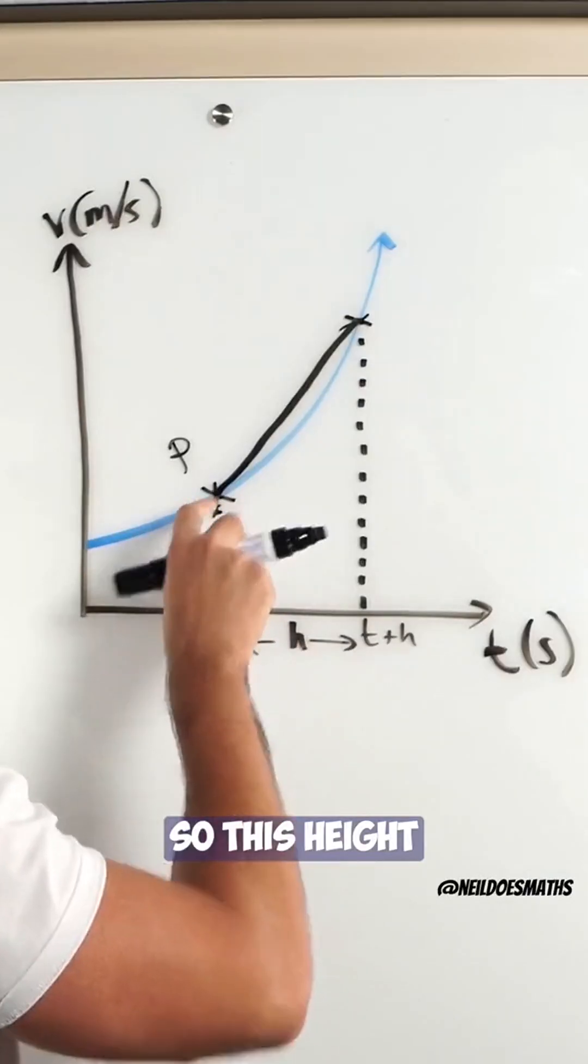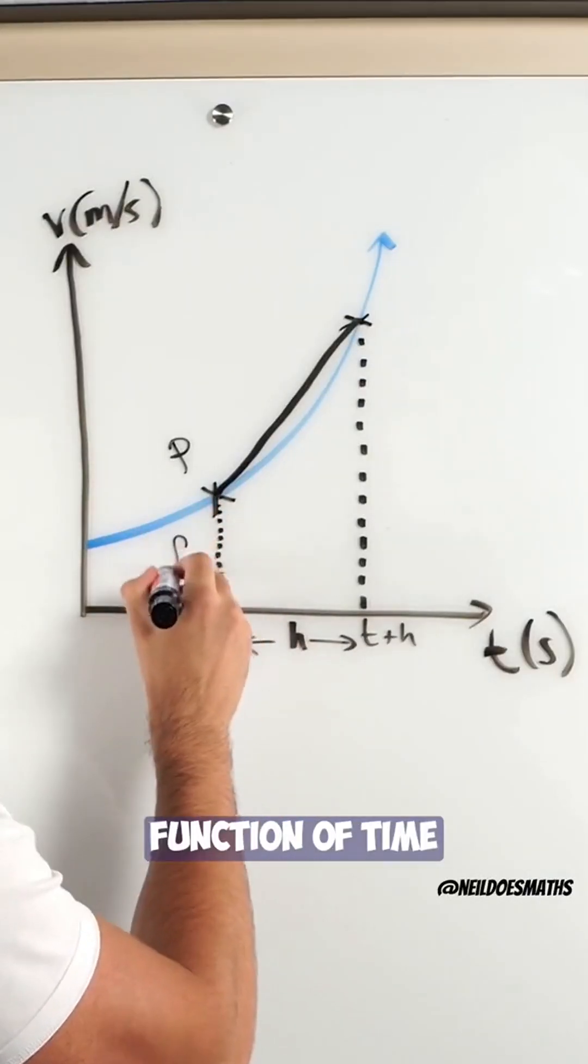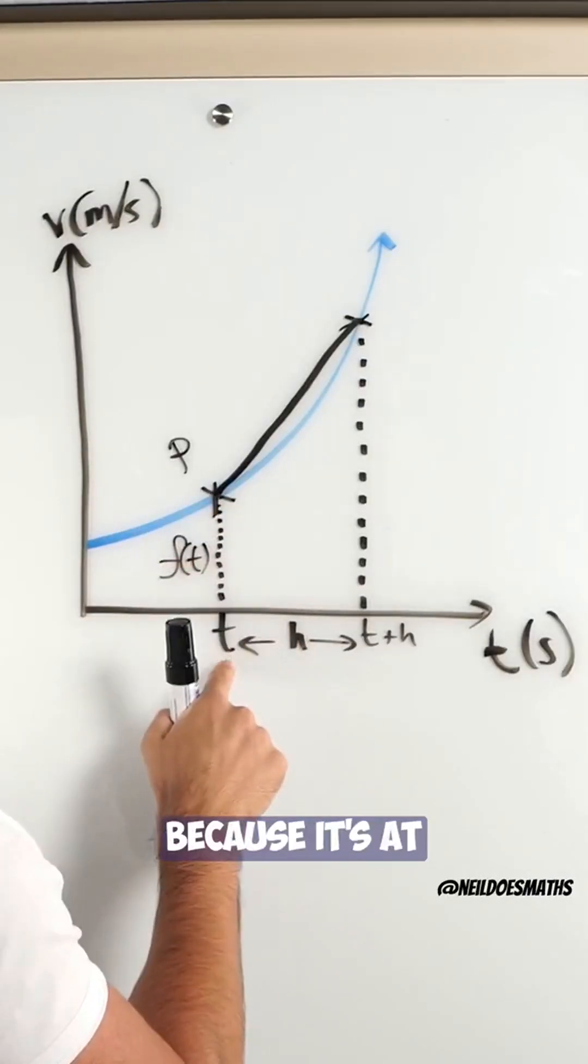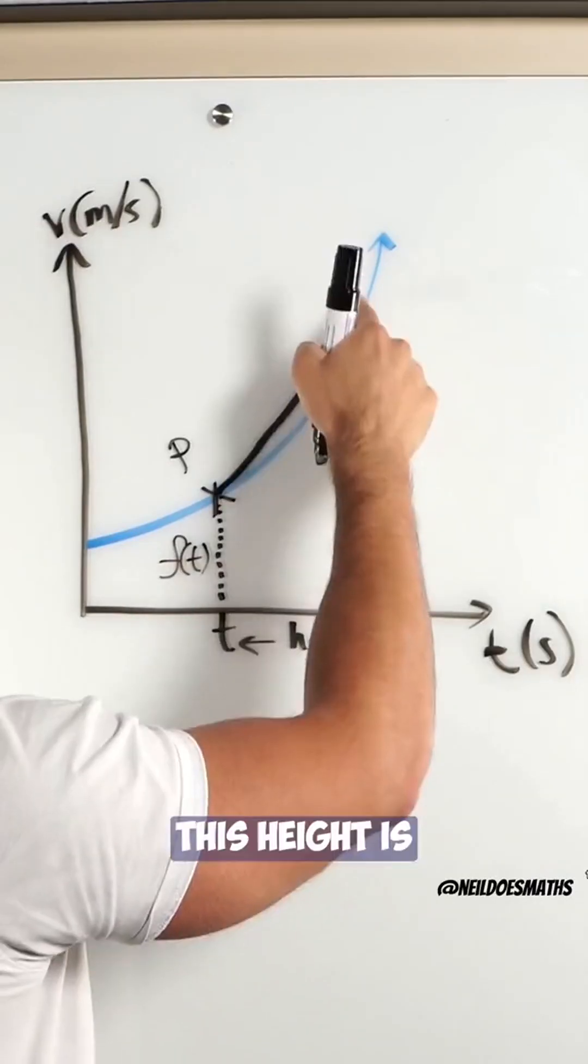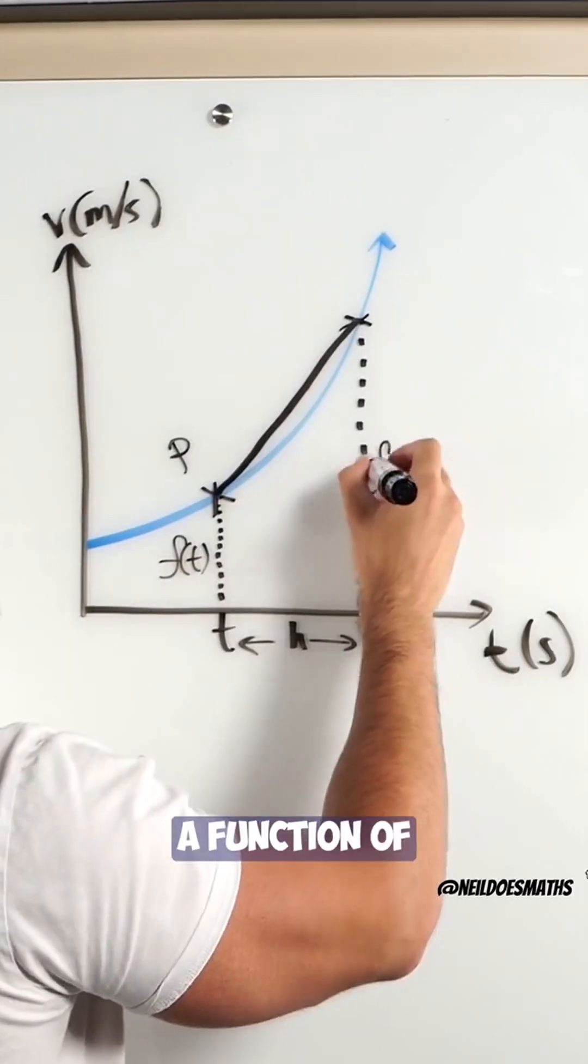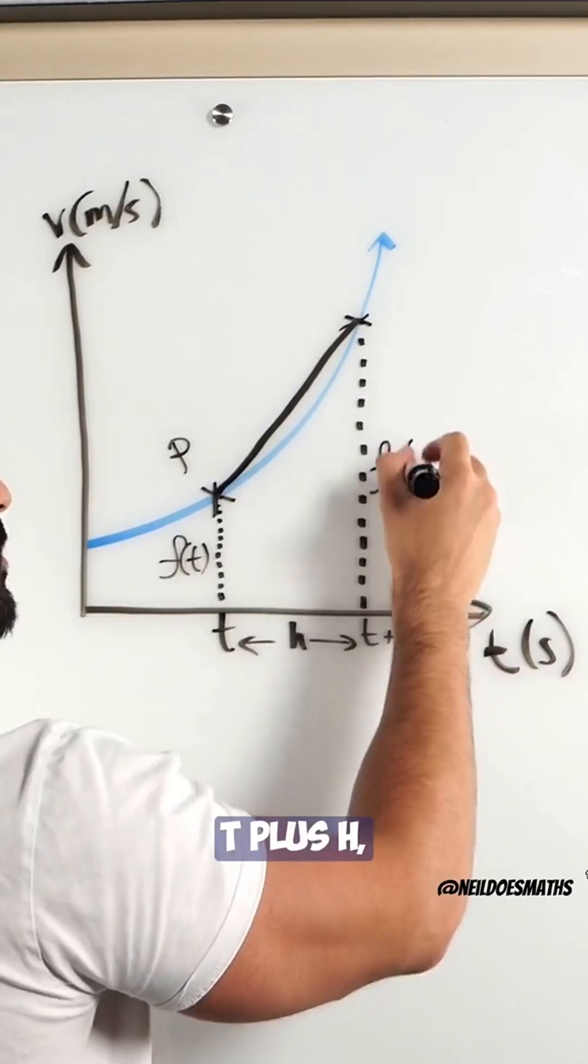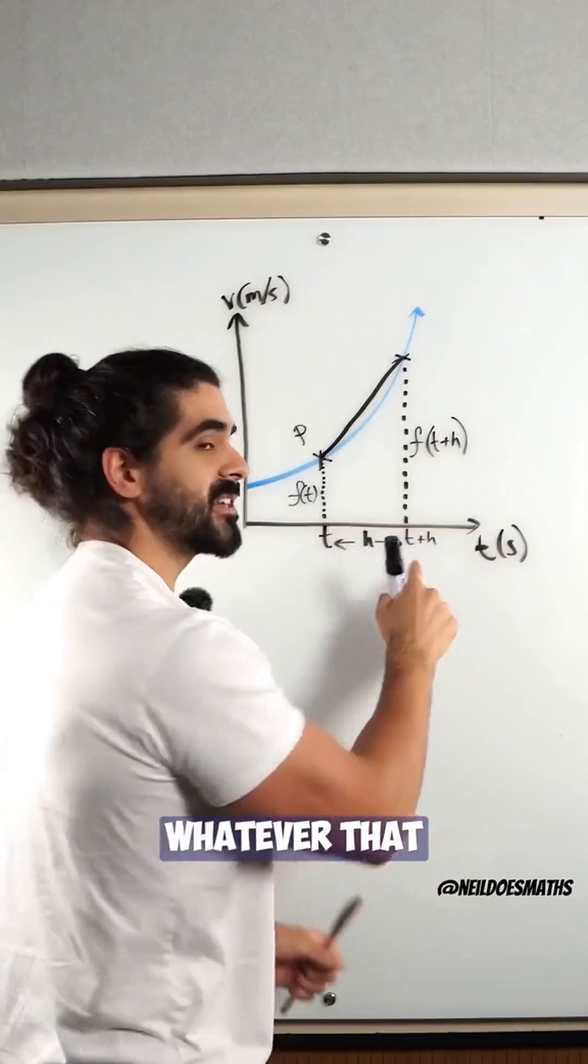So this height here is a function of time because it's at time t. This height is a function of t plus h, whatever that time is.